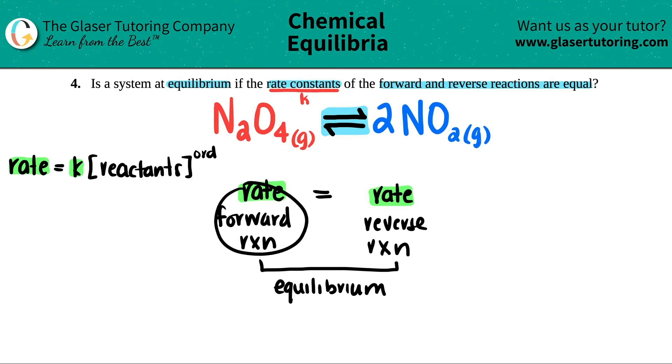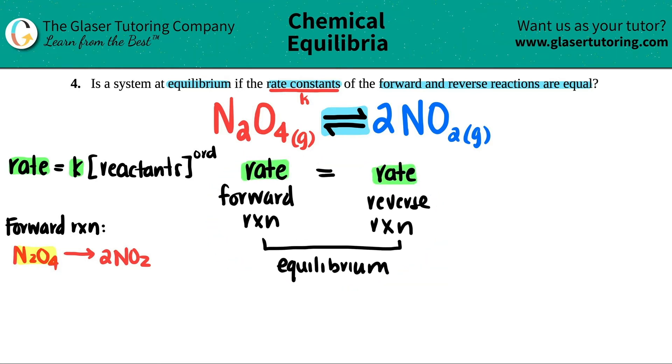The forward reaction is N2O4 leading to 2NO2. So in that equation, this is the reactants. For the forward reaction, it would be K times the concentration of N2O4 raised to whatever order that is - I'll label it as X. Do you see how it's linked to the reactants? I don't put the NO2 because that's a product, not a reactant. In your rate law, it's only reactants.